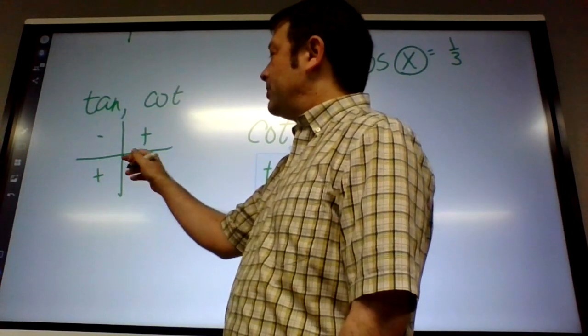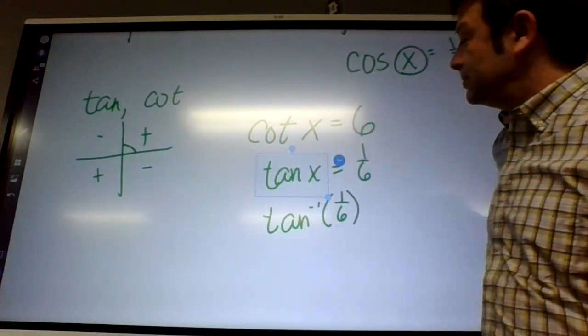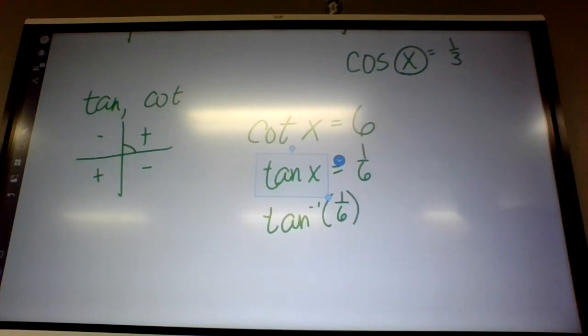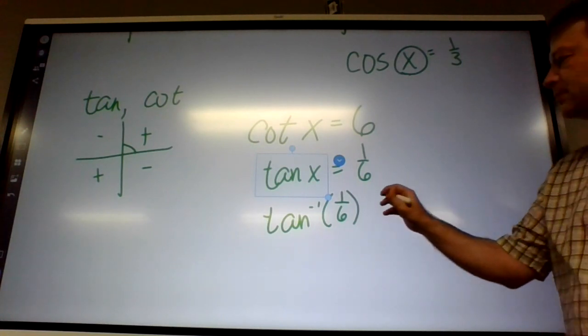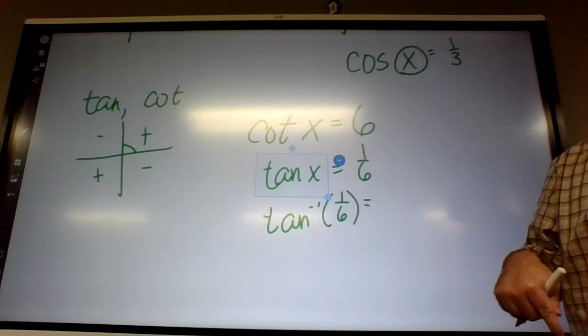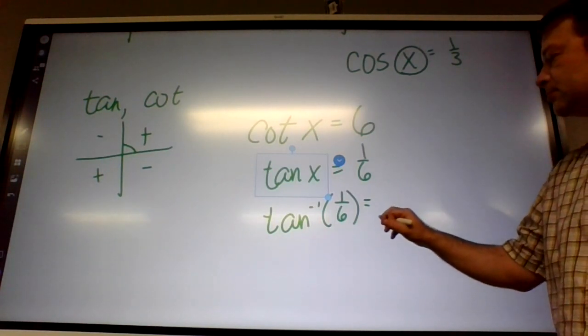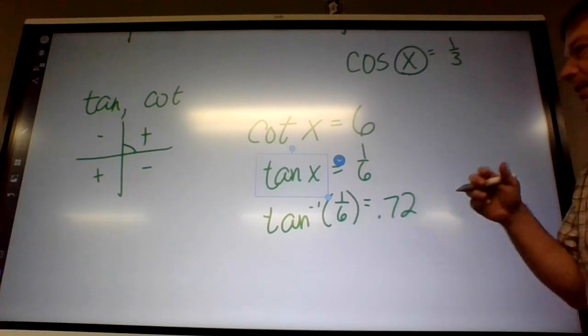Because this is cotangent equaling a positive, that means my two answers are going to be in the first and the fourth quadrant. All right. Well, the calculator is only going to give me one answer, right? And in this case, it will be the first quadrant angle. What did you get, Sam? .17.